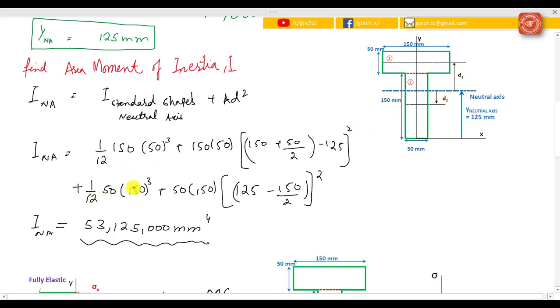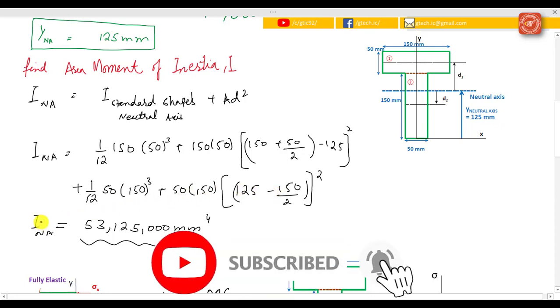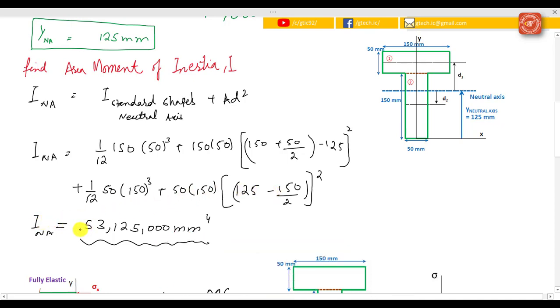Plus, do the same thing for the other section: 1/12 × 50 × 150³ plus 50 × 150 (the area of this cross section), and then the distance of this cross section d_2 is calculated from here. The area moment of inertia is 53,125,000 millimeter to the power 4.